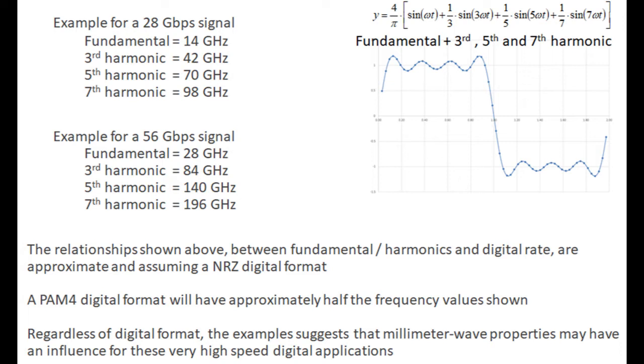Now, even a faster rate, 56 gigabits per second, you can see that the frequencies go up. So the fundamental now is at 28 GHz, which is pretty close to millimeter wave, and then everything else beyond that is well in the millimeter wave range at 84 GHz, 140, and 196 GHz. Now, the relationships I'm showing here are approximate, and they are for the digital format of NRZ or PAM2. And there is a different format that's relatively new. It's called a PAM4 format, and that's a little different. It's where you actually have multiple layers of digital processing.